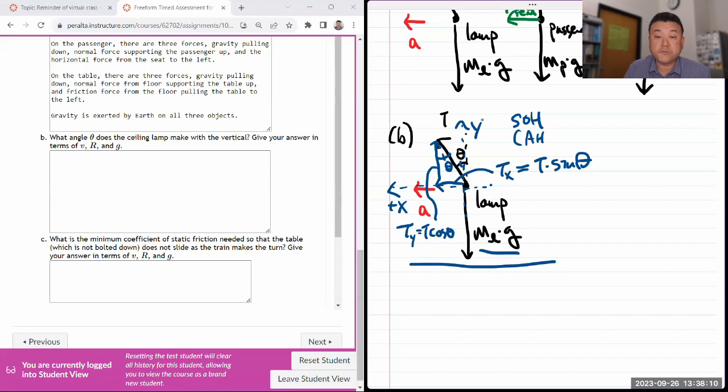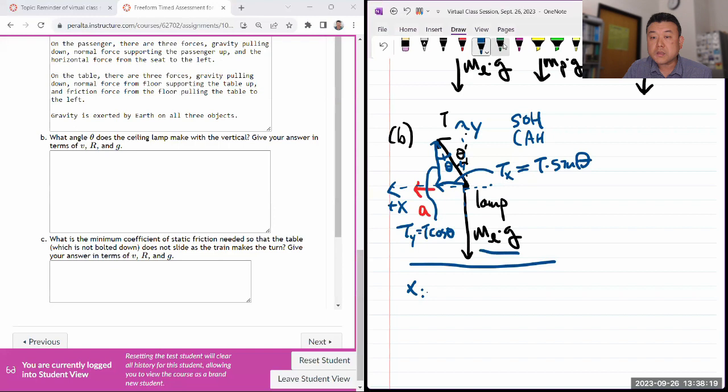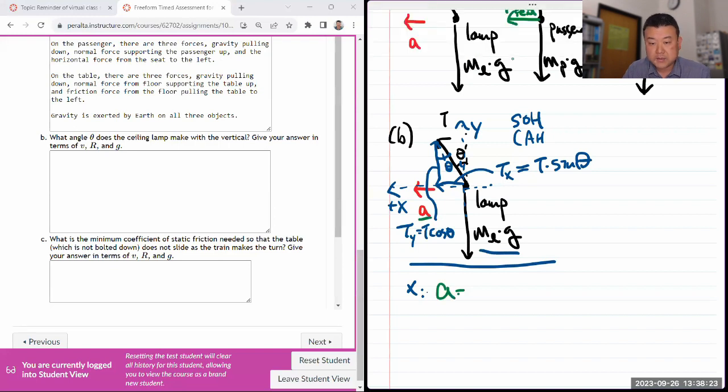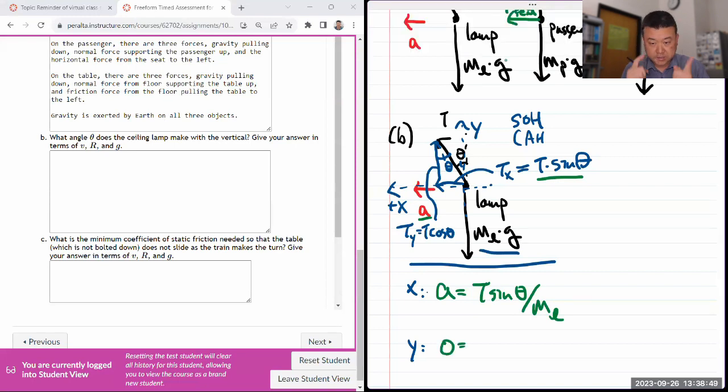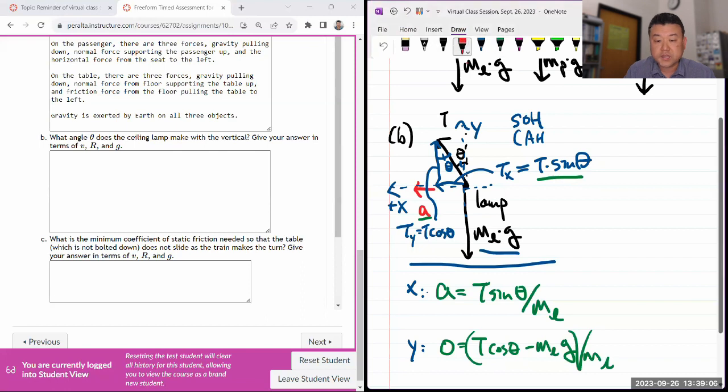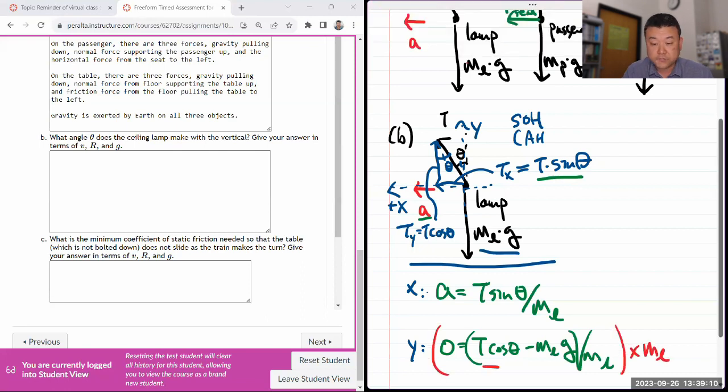Once those steps are done, then I'm ready to do step number four: write down Newton's second law equations by referencing this annotated free body diagram. My x component, the acceleration which I labeled A already, is equal to my x component of force, which is just T sine theta divided by mass of the lamp. My y component of the forces, the acceleration will be zero. Zero is equal to the net force, which would be T cosine theta minus m_l g divided by m_l. To make this look simpler, you can imagine multiplying through by m_l so you just have to worry about this numerator being zero.